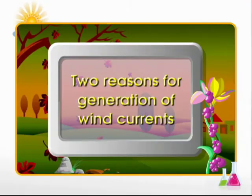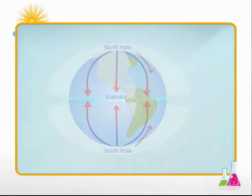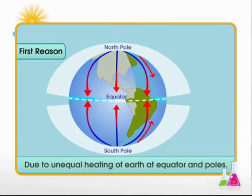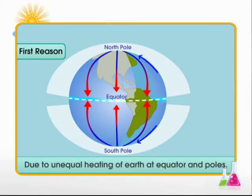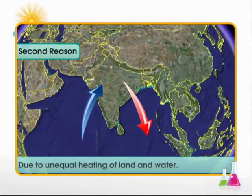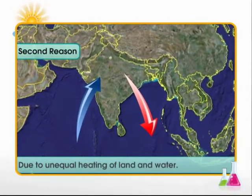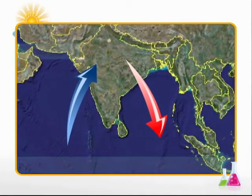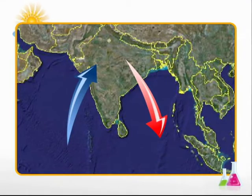Across the earth, there are two reasons because of which wind currents are generated. Firstly, due to unequal heating of earth at equator and poles. Secondly, due to uneven heating of land and water. Let's understand these two reasons one by one.